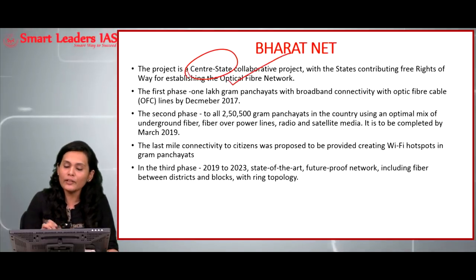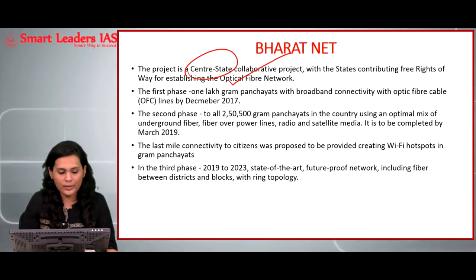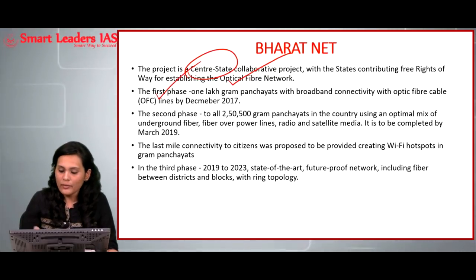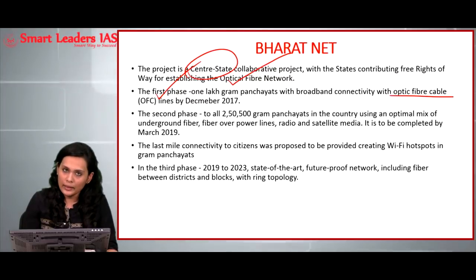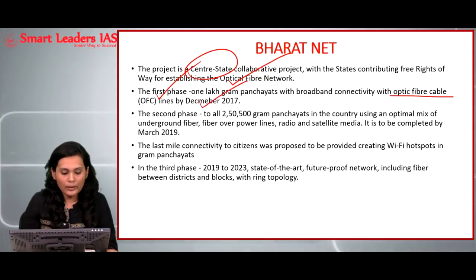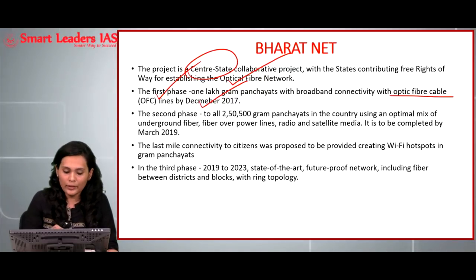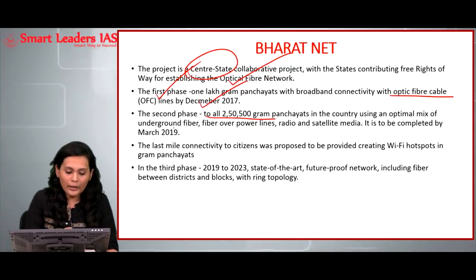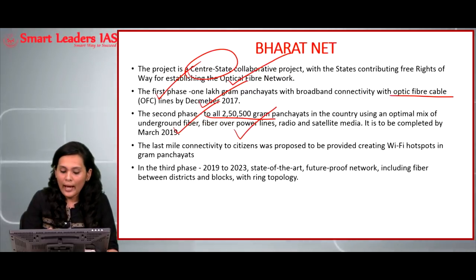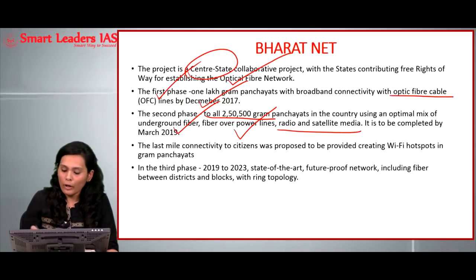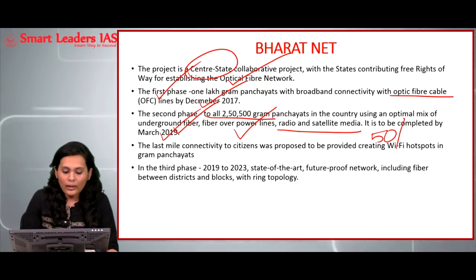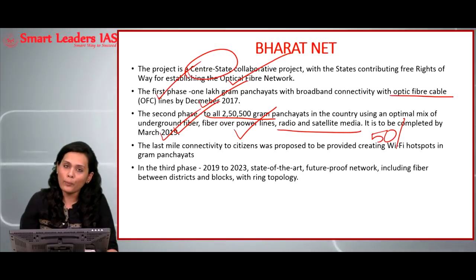This is a three-phase project. The first phase provides connectivity to about 1 lakh gram panchayats via optical fiber cable, and according to government data, this target was achieved by December 2017. The second phase proposes to extend digital connectivity to all gram panchayats — about 2.5 lakh — via an optimal mix of underground fiber, fiber over power lines, radio, and satellite media. According to government data, about 50 percent of this target has been achieved currently, and the rest will be achieved by March 2019. Last-mile connectivity to citizens is also proposed by creating Wi-Fi hotspots in areas such as railway stations, bus stands, and other public places.